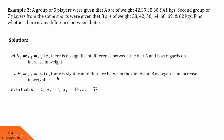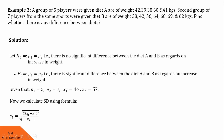Now let us note down the data from the question. N1, the first sample, is of size 5 and N2, the second sample, is of size 7. X1 bar is 44 and X2 bar is 57. After this, first we find out the standard deviations of these two datasets. The standard deviation of the first data is S1, given by under root of [summation (X1 minus X1 bar) squared divided by (N1 minus 1)]. By substituting these values, we see S1 is 9.08. Similarly, S2 given by under root of [summation (X2 minus X2 bar) squared divided by (N2 minus 1)] has value 12.42.